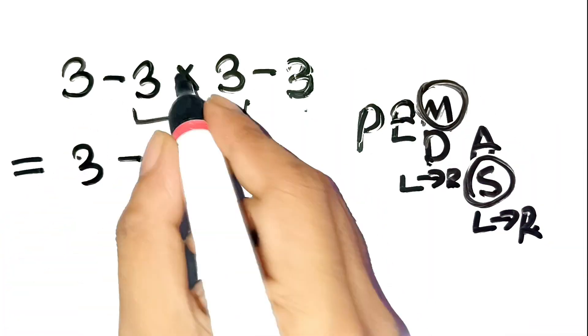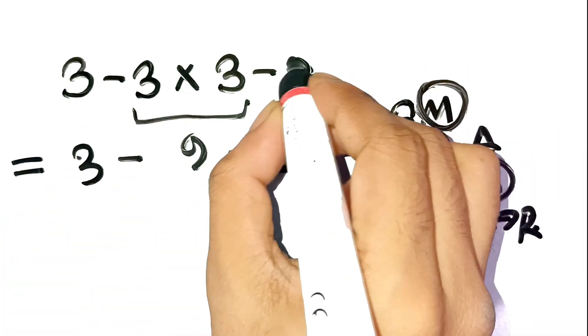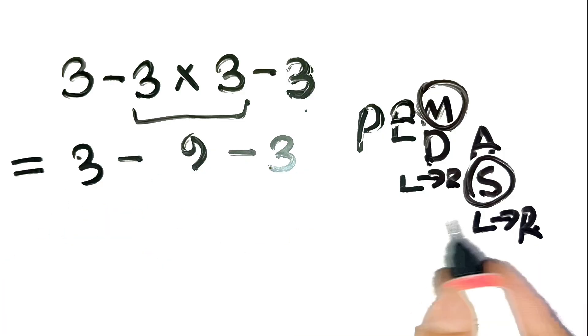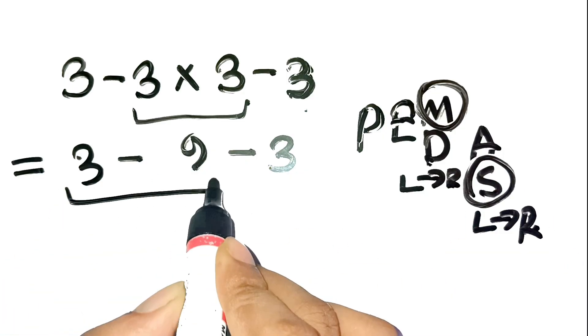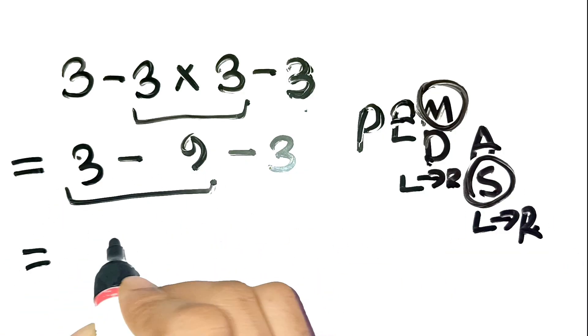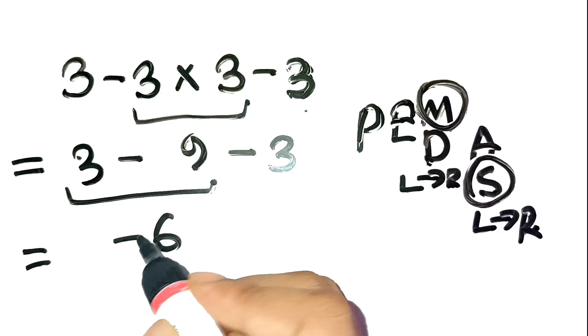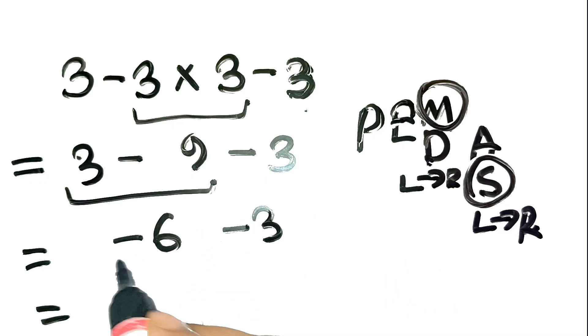Next, move left to right with subtraction. 3 minus 9 is negative 6. Then, negative 6 minus 3 equals negative 9.